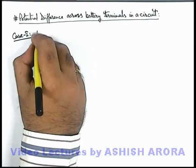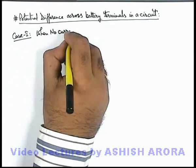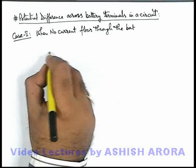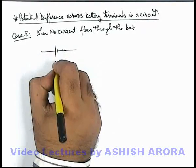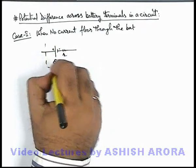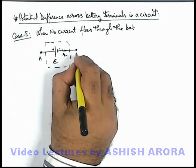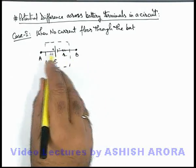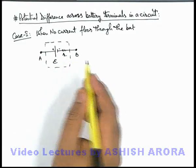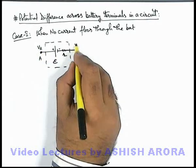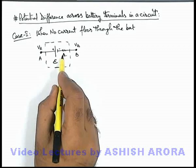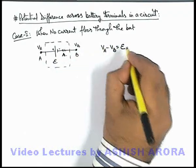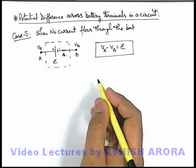Case 1 is the situation when no current flows through the battery. Here we have a real battery with EMF e and internal resistance r connected in series. In a real battery, we can never detach its internal resistance from the battery EMF. Since no current is flowing, there is no potential drop across the internal resistance. So we can write that V_A minus V_B equals the EMF e. This is the open circuit terminal voltage.